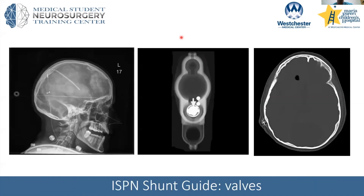Here are some examples of shunt valves. There are numerous different types, but with a lateral skull x-ray you can get a good look at the markings — this is the catheter going into the ventricle, this is the valve, and this gets tunneled down to the abdomen or another body site. Axial images on bone windows can also be very helpful to trace the valve and tubing. The International Society for Pediatric Neurosurgery has a website called the Shunt Guide, which covers all commonly used valves, their radiographic appearance, and pressure settings — definitely save this in your favorites for when you're an intern sorting out which valves patients have.